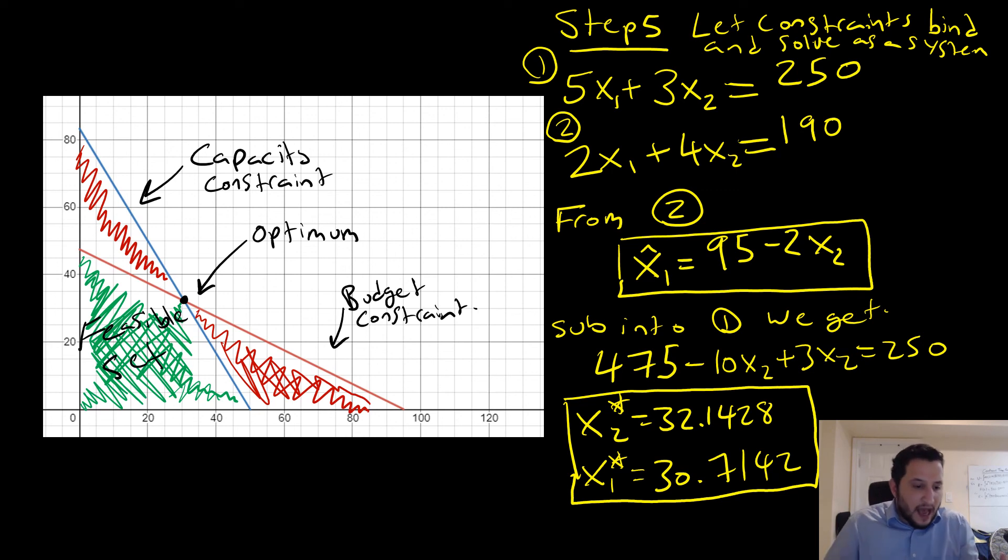So this is how we would solve a little bit more of a complicated problem when we have two constraints. And we just have to be cognizant of the fact that there are two things going on. So I hope this video helps. Take care.